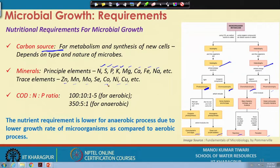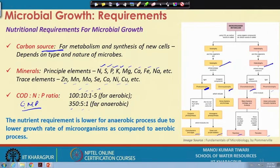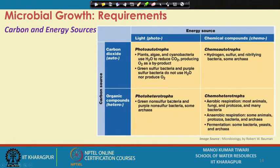There has to be an appropriate carbon-nitrogen-phosphorus (CNP) ratio. COD is reflective of total organic carbon, so the COD:N:P ratio is essential. For aerobic processes the ratio is 100:10:1 to 5, while for anaerobic processes it is broadly recommended as 350:5:1. The nutrient requirement is lower for anaerobic processes due to the lower growth rate of microorganisms — in anaerobic, the growth rate is essentially very low as opposed to aerobic processes.